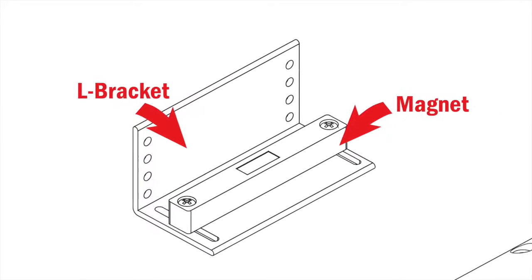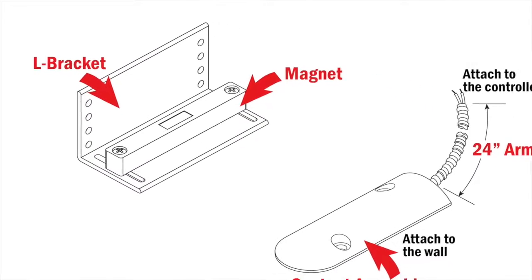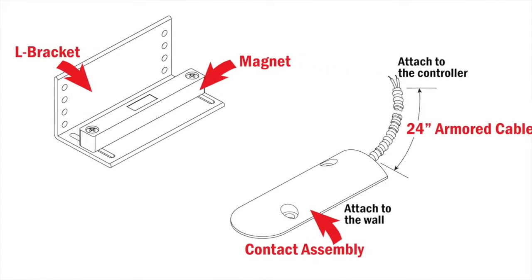The L-shaped bracket holds the magnet, which, when greater than 2 inches from the contact assembly, will trigger the digital input that the door is opened.